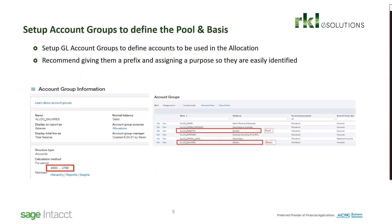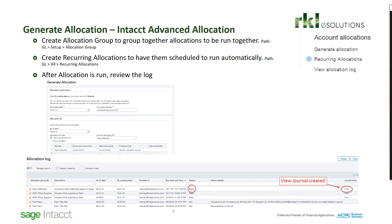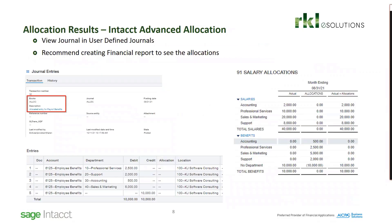You'll then set up the account groups that define your pool and your basis. In each group, you can decide which accounts need to be listed. The Intact advanced allocations will then put those pieces together and ask you for the pool, the basis, and the target. You can also group together allocations that will be run together — so at the end of the month, if you have five allocations to run, you can group them. Intact gives you a log to let you know which allocations were successful and which were not. The allocation results will appear in that defined journal set up. I recommend creating a financial report to see your allocations after they're completed, but also look at them beforehand so you can validate that they're working properly.